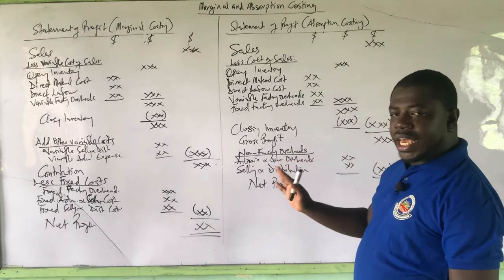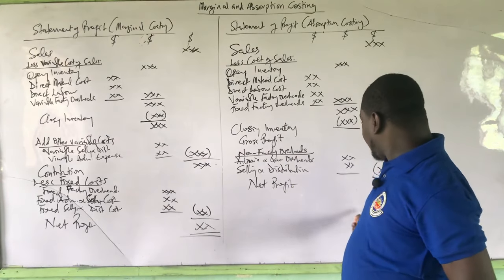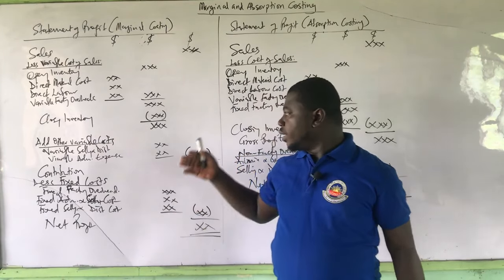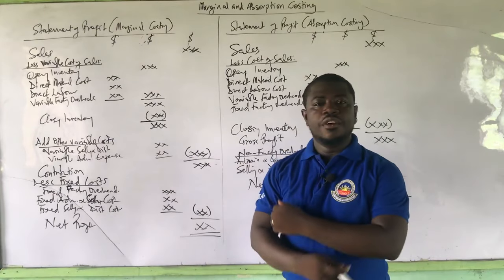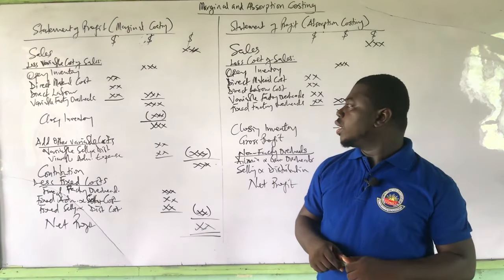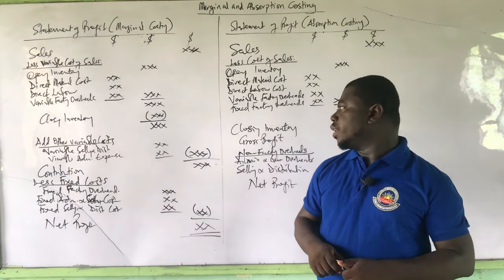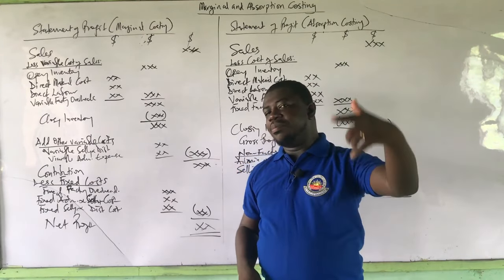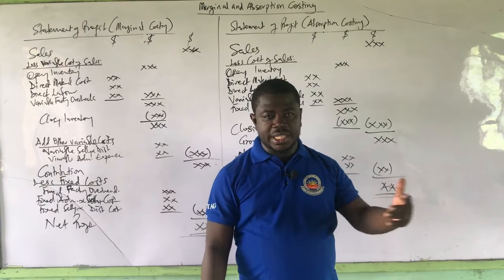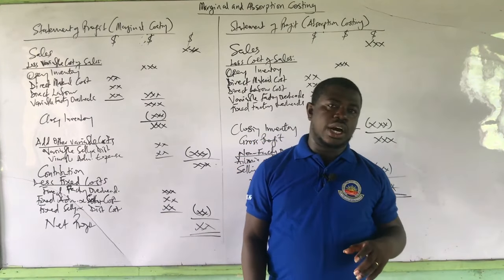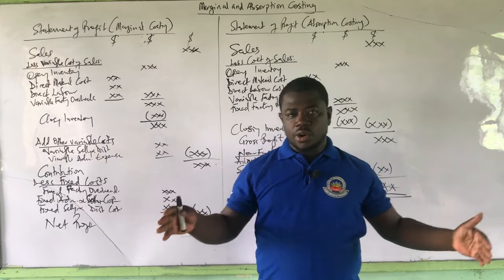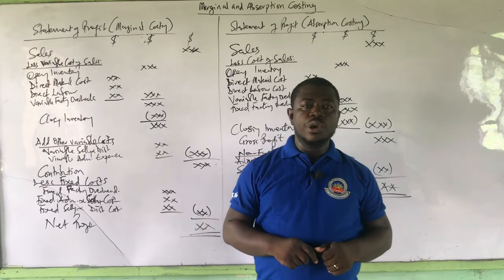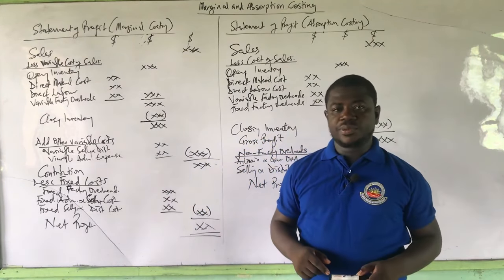After calculating and getting the two profits, we are going to reconcile them in another statement, and that is going to show us how these profits became different — it's going to be from the way the closing stock was valued. After we have understood that from the question, there will be a third video where we are going to talk about over and under absorption, take another complex question, solve them together, and then we'll be okay from there with marginal and absorption costing.